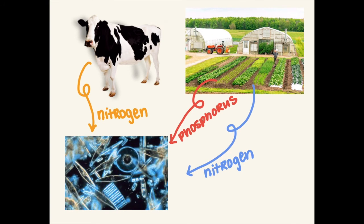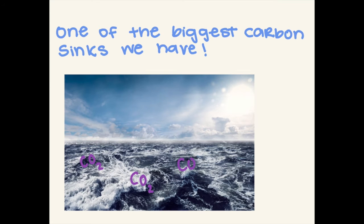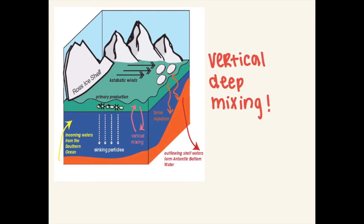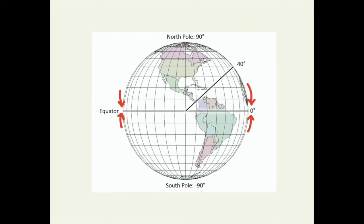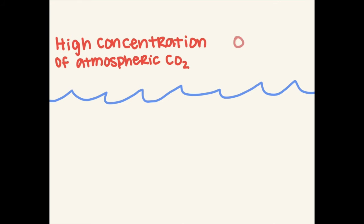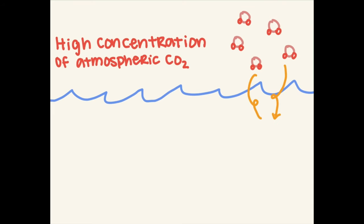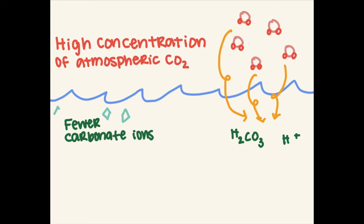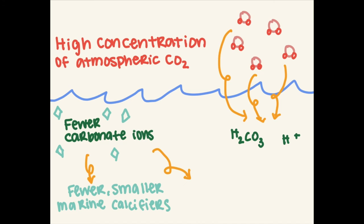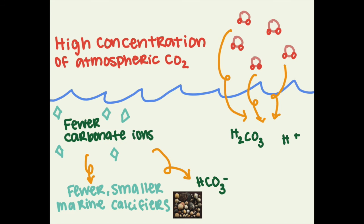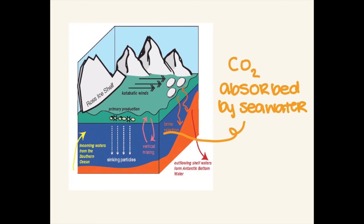The global ocean is actually one of the largest carbon sinks we have. Through a process called vertical deep mixing, when currents are carried from low to high latitudes, they cool and become heavy enough to sink below the surface. The cooling of the water allows it to dissolve atmospheric CO2 and take it below the surface. However, this process is what causes ocean acidification, because when CO2 is absorbed by seawater, chemical reactions occur that reduce the pH of the seawater and carbonate ion concentrations.